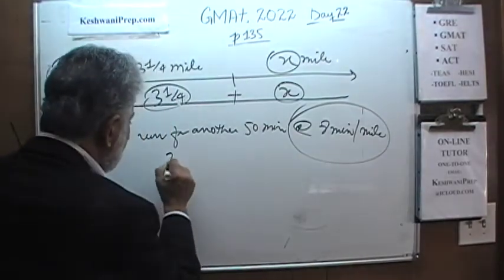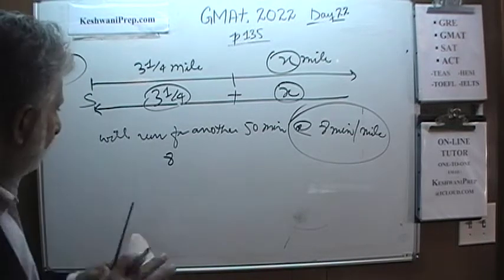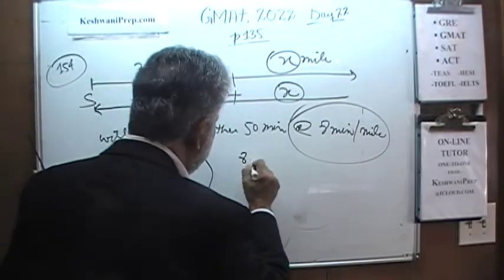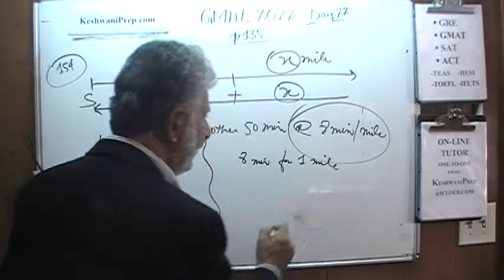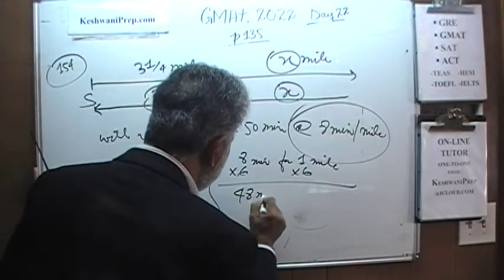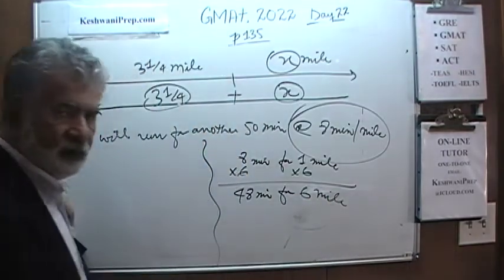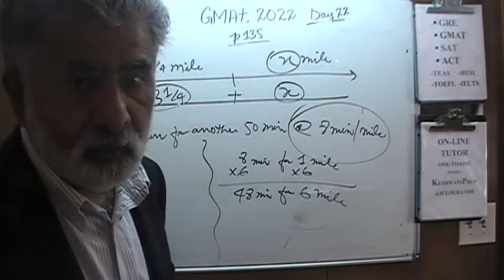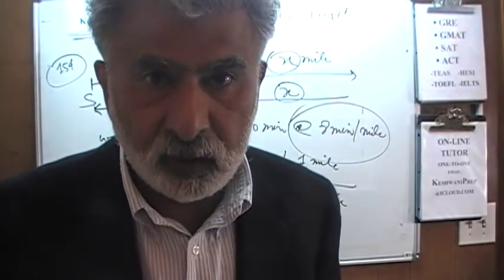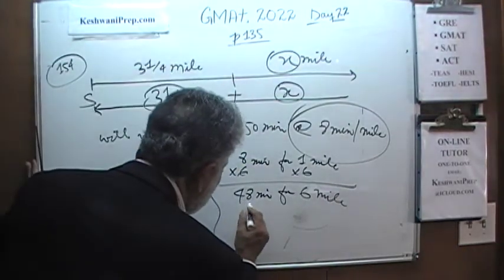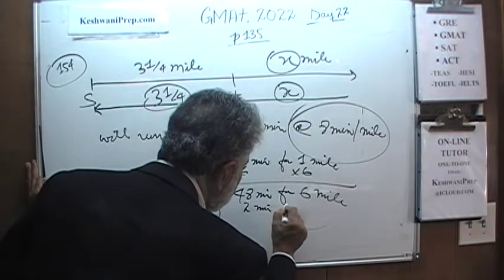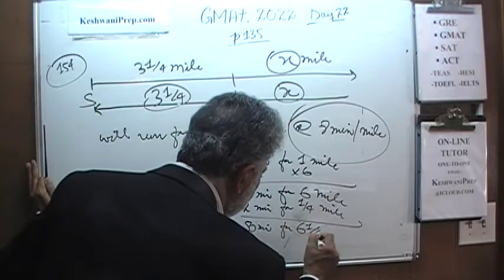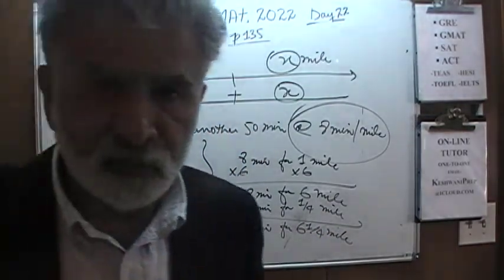At 8 minutes per mile, multiplying by 6 tells us 48 minutes covers 6 miles. We have 2 minutes remaining. At 8 minutes per mile, 4 minutes covers half a mile, so 2 minutes covers a quarter mile. Therefore 50 minutes covers 6.25 miles total. That's one way to do it.